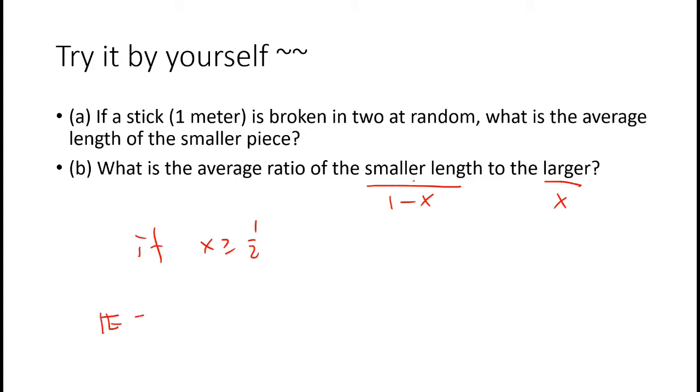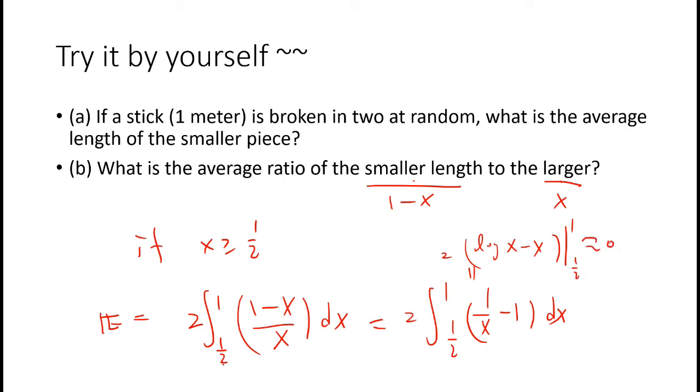So the expectation value just would be half to 1 of (1 minus x) divided by x dx. And then we just need to times 2. This 2 just basically, suppose x is less than half, then the expectation is the same. Okay, so this is just common calculus. Half times log of x minus x. So the answer is close to 0.386.